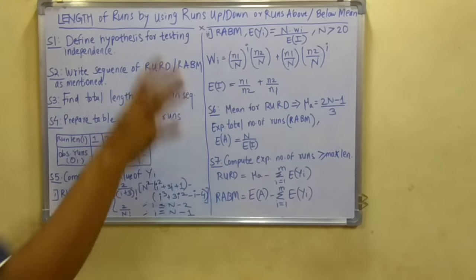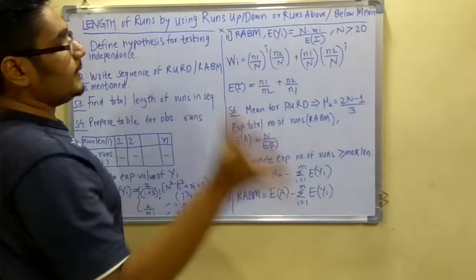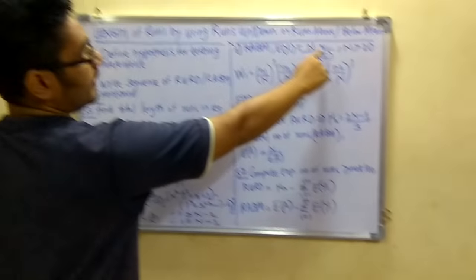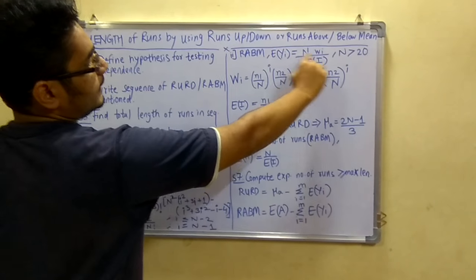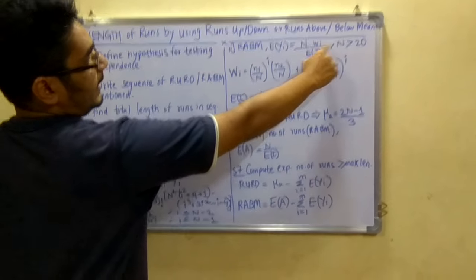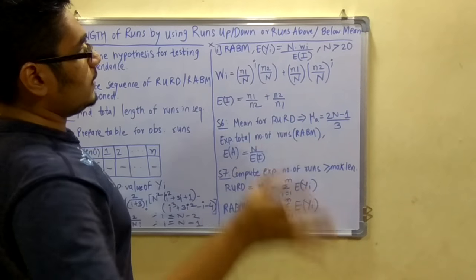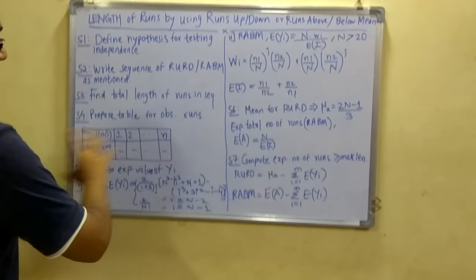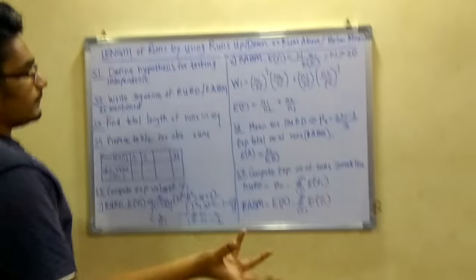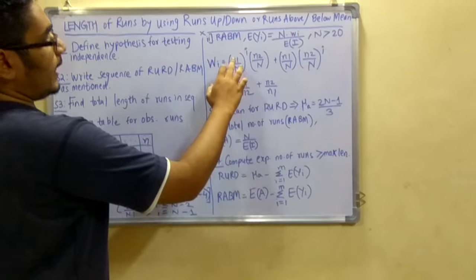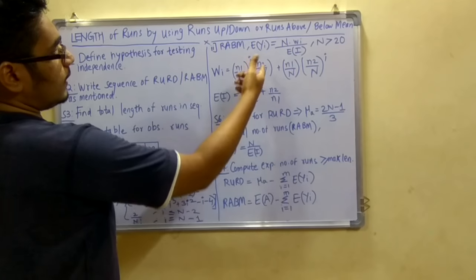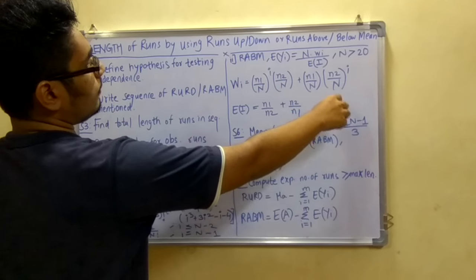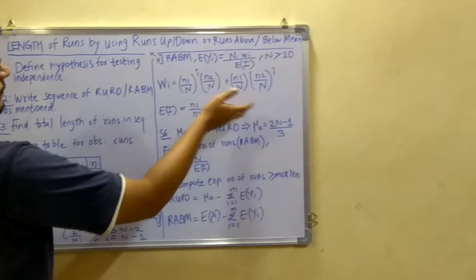Now this is for RURD. Let's move on to RABM. For RABM, the expected value of yi is given by n multiplied by wi divided by ei where n is greater than 20. This yi stands for the approximate probability that a particular length has i value. It is given by (n1/n)^i × (n2/n) + (n1/n) × (n2/n)^i - this is just a mirror of the LHS.